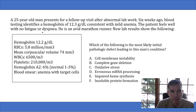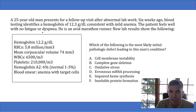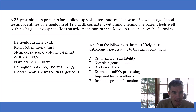The question says a 25-year-old man presents for follow-up after abnormal lab work. Six weeks ago, blood testing identified a hemoglobin of 12.3, consistent with mild anemia. The patient feels well with no fatigue or dyspnea. He is an avid marathon runner. New lab results show: hemoglobin of 12.2, RBCs of 5.8 million, MCV of 74, white blood cells of 6,500, platelets of 210,000, hemoglobin A2 of 6% (normal being 1 to 3%), and a blood smear showing anemia with target cells.